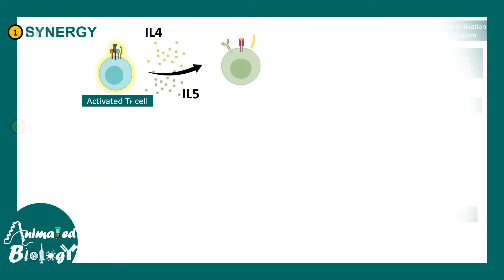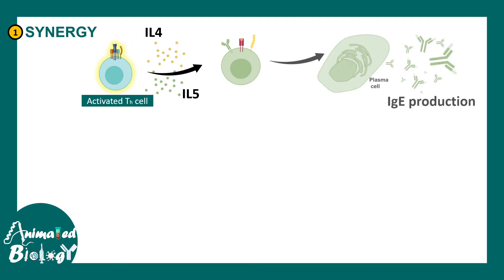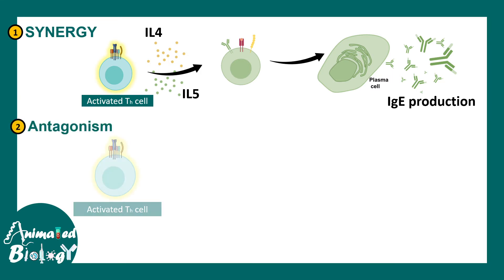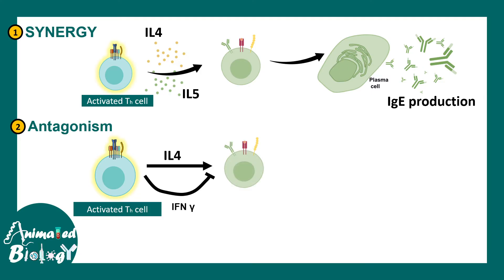Other modes of cytokine action include synergy, where two different cytokines work together — for example, IL-4 and IL-5 trigger B cell differentiation into IgE-producing plasma cells. There can also be antagonism, where one cytokine prevents the action of another — for example, interferon gamma inhibits IL-4 and prevents IgE production via specific plasma cells.